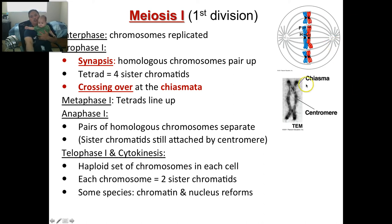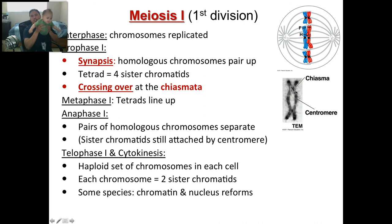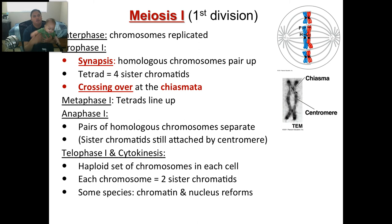Under an electron microscope you can see chromosomes actually crossing over and exchanging information. What once were X's that were completely one color cross over and mix, becoming partially both colors. In metaphase they go down the middle, in anaphase they separate, and telophase and cytokinesis are the same as mitosis.